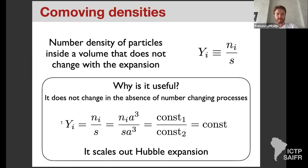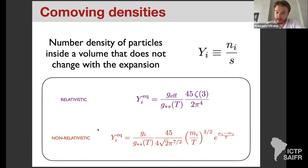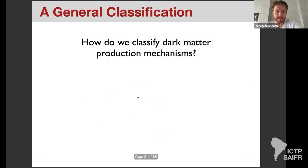Y does not change with time after the production mechanism stops, while n will change. I also provided the limiting expressions for Y in the relativistic and non-relativistic regimes, which you can check using the equations I've given in the previous slides.